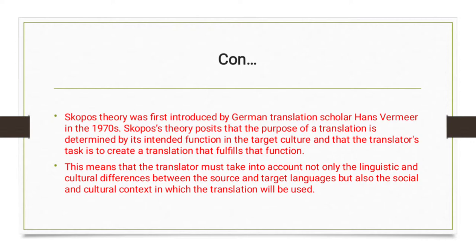Skopos theory was introduced by German translator Hans J. Vermeer in 1970. Skopos theory holds that the purpose of translation is determined by its intended function in the target culture, and the translator's task is to create a translation that fits that function.